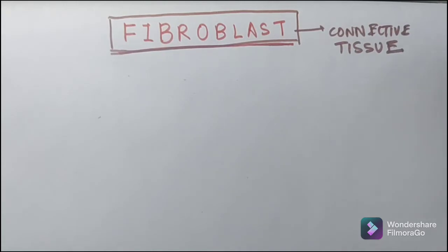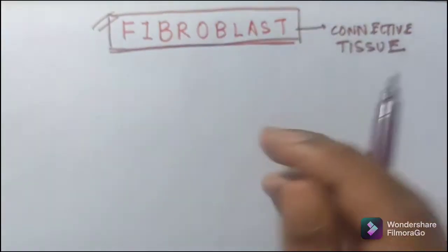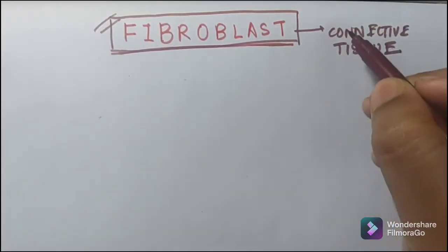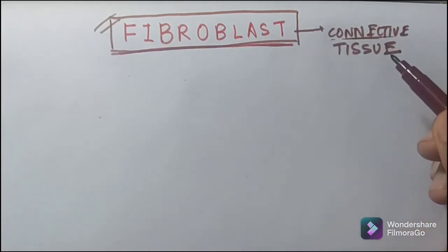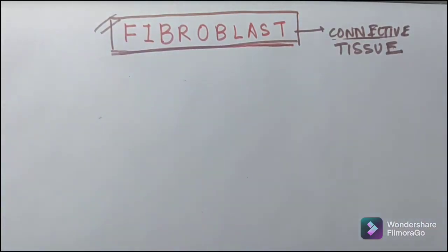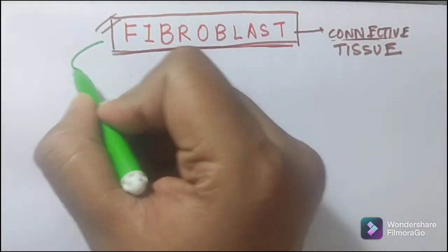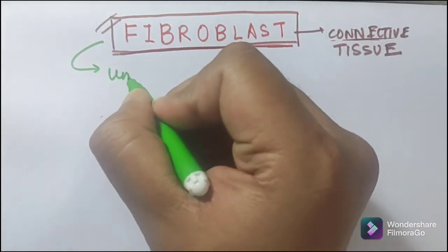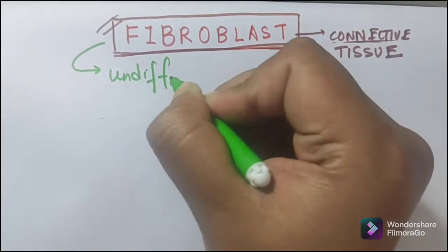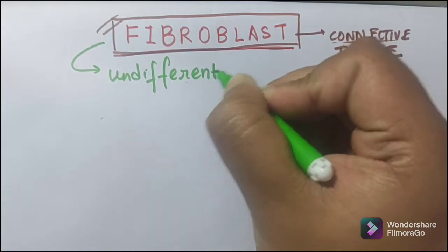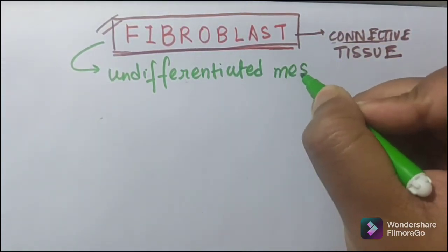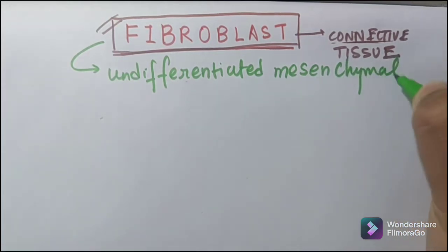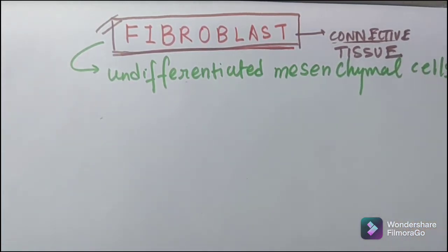Hello everyone. Today our topic of discussion is the fibroblast. Fibroblast is one of the principal cells found in the connective tissue. These cells are numerous and derived from undifferentiated mesenchymal cells of our body.